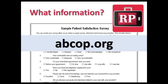It's simple to find the resource kit. Just go to abcop.org, go to the accreditation section, click on the red toolkit icon in the upper right-hand corner, and log into your accreditation account. All of the resources are there for your taking.